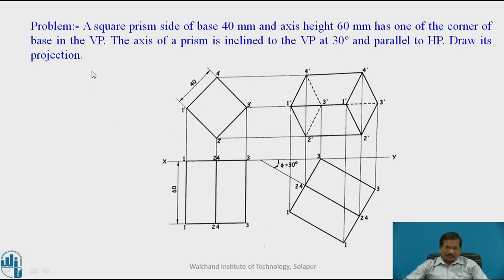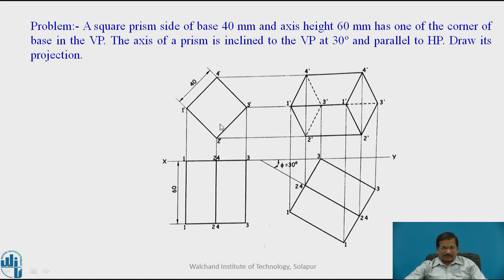Now regarding a square prism resting on VP: when it rests on VP, its front view will be visible as a square and the top view as a rectangle. The corner is on VP, so draw the square in such a way that the corner is towards the right-hand side. Draw the square with the corner to the right, project it downwards, complete the top view according to the axis length. This diagonal will be parallel to the XY line, and when rotated, the prism rests on one of its corners. This is the first stage.